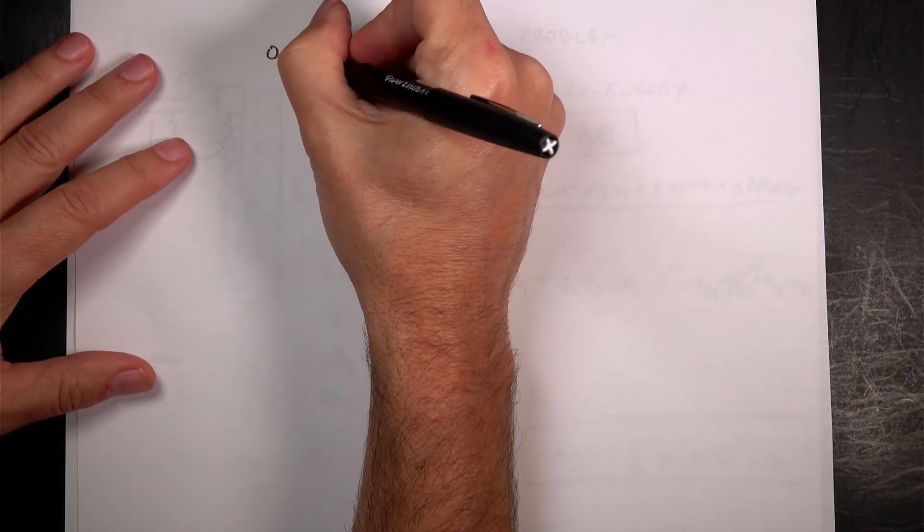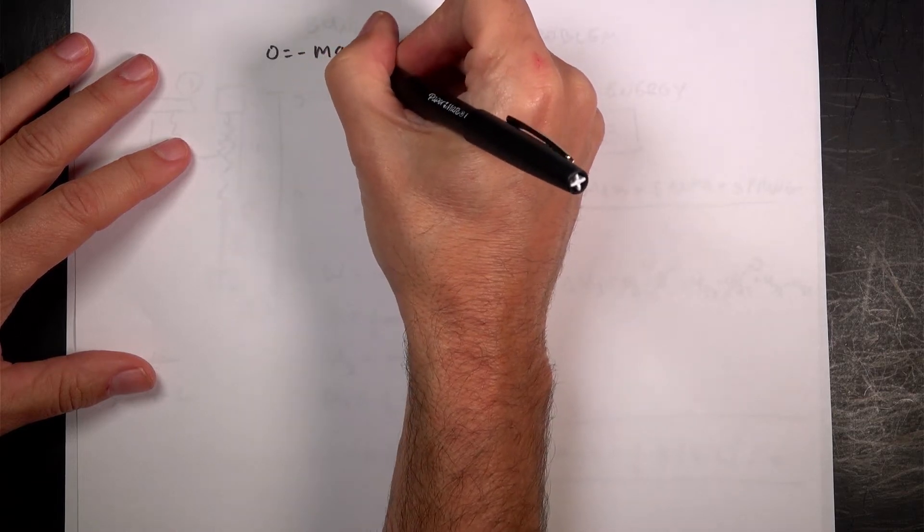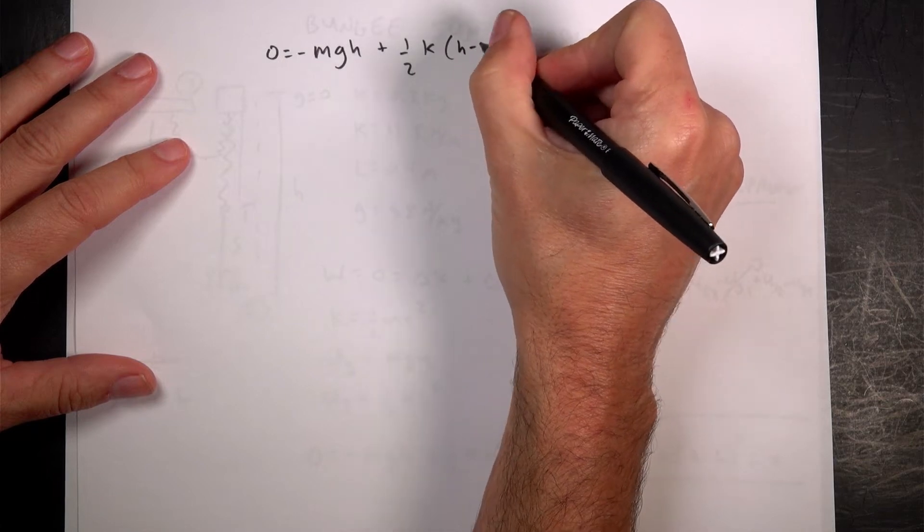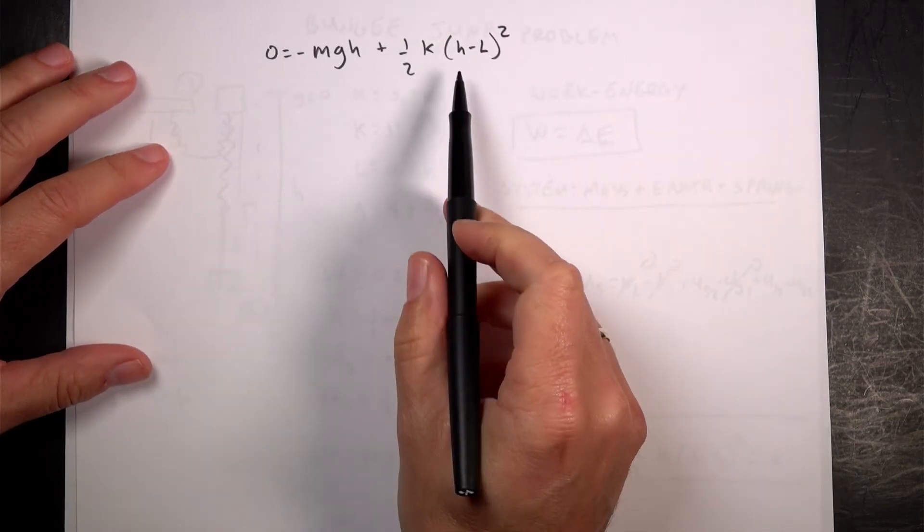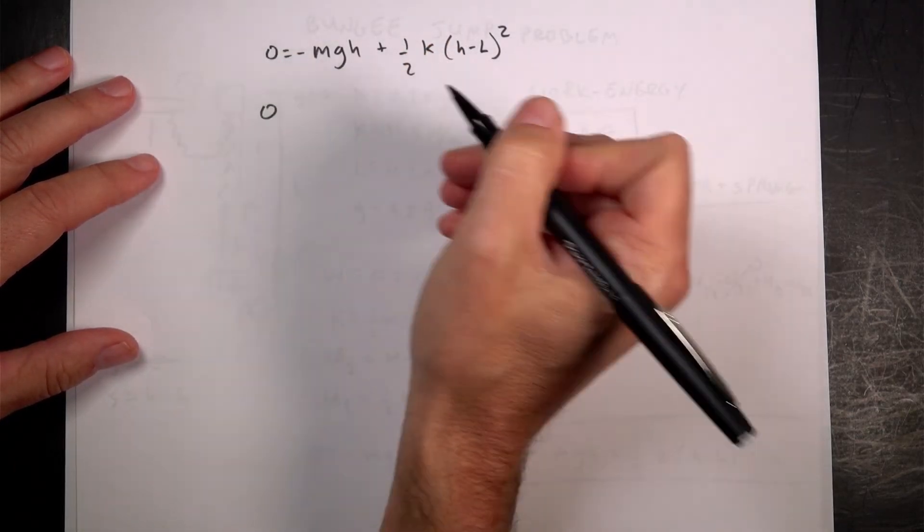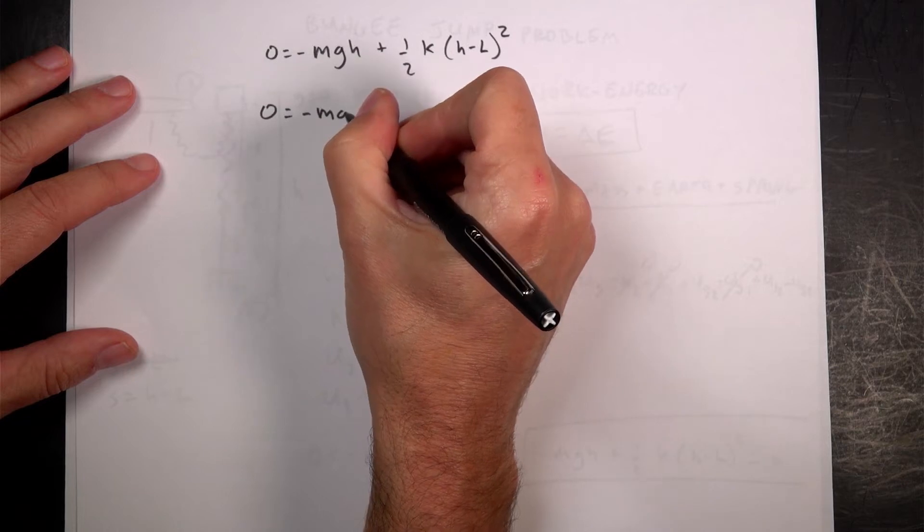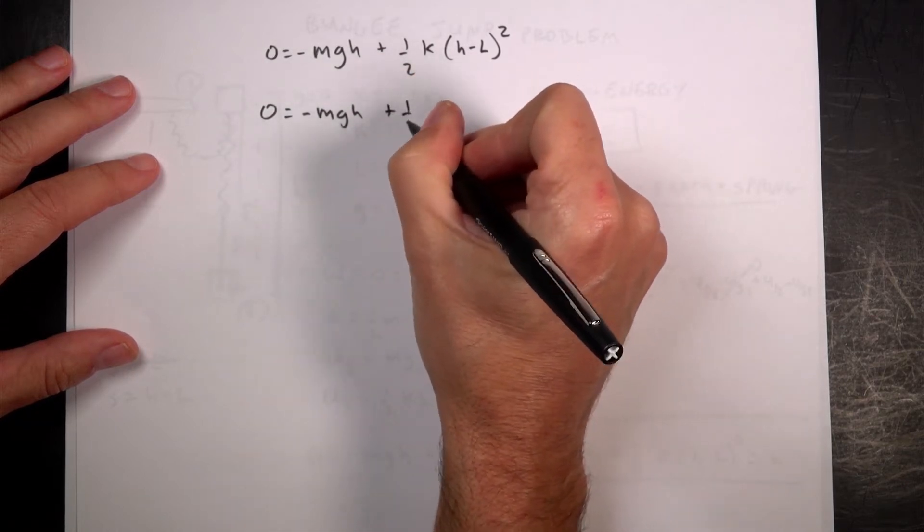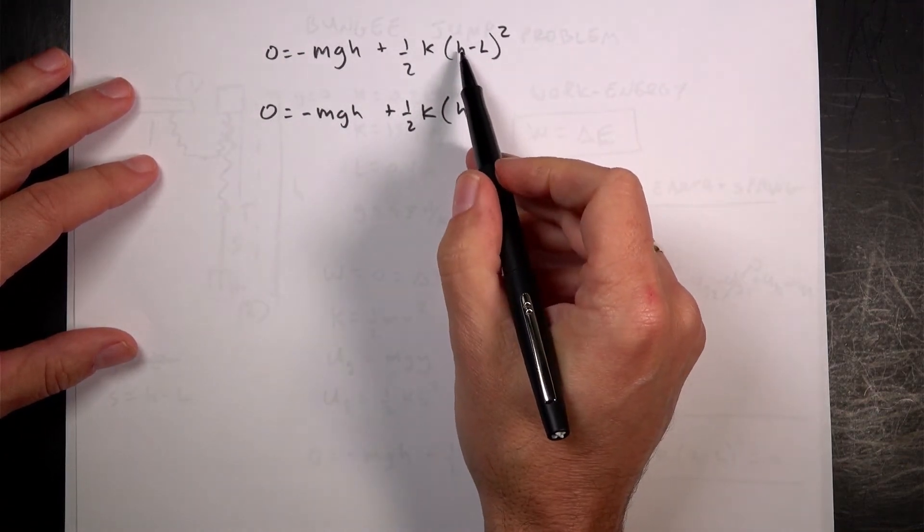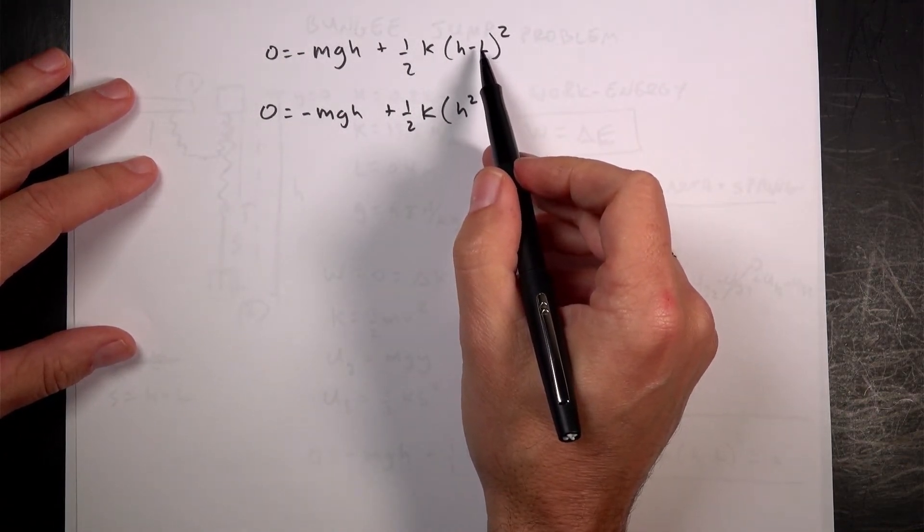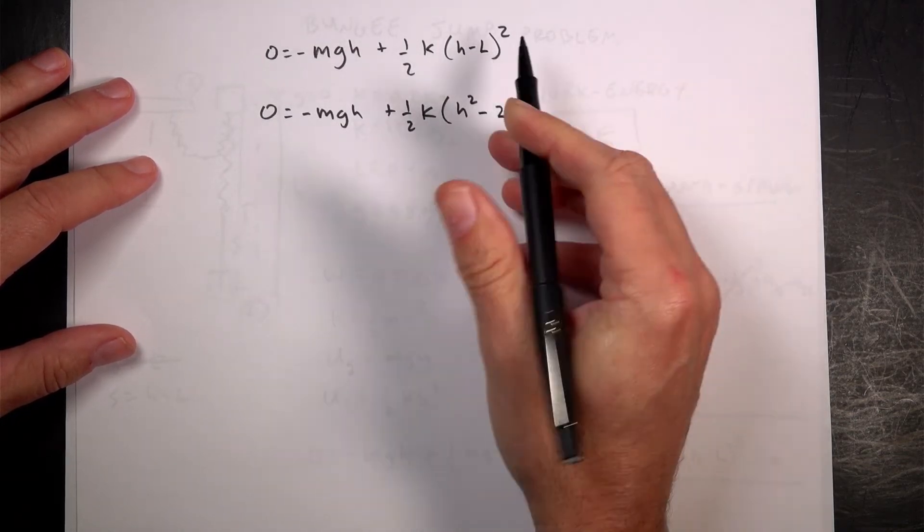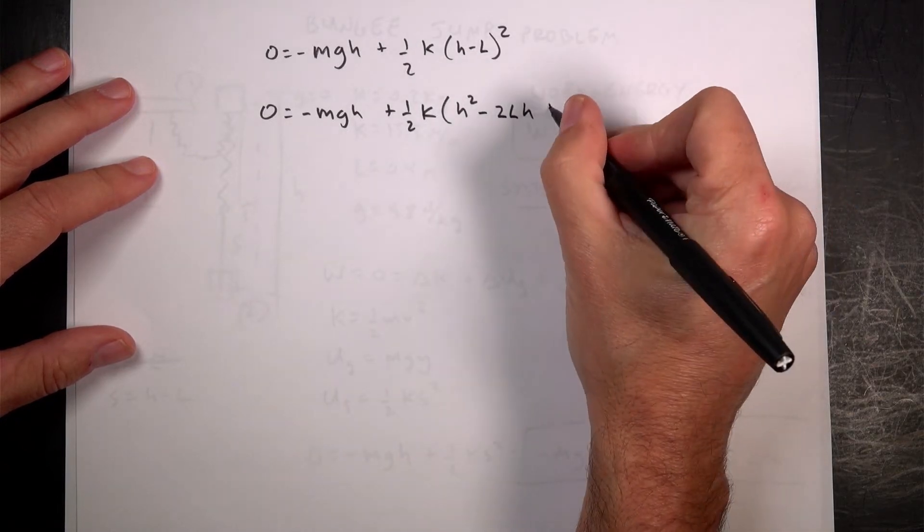So let's write that equation. Zero equals negative MGH plus one half K H minus L squared. So the first thing I can do is to square out this term. Zero equals negative MGH plus one half K. And then I get H squared. H times H. And then I can get H times negative L. It's going to be negative LH. But then I can get negative L times H. So I get minus two LH. And then I get negative L times negative L. So plus L squared.